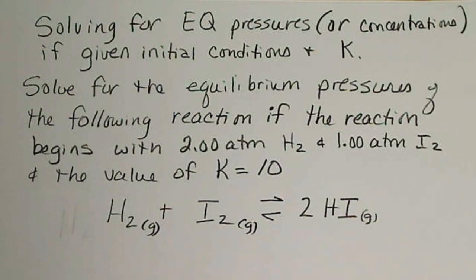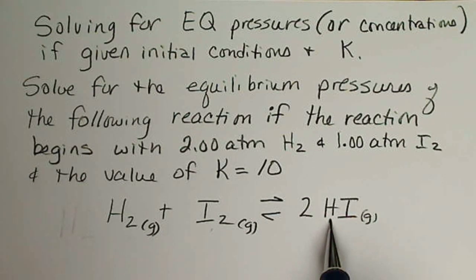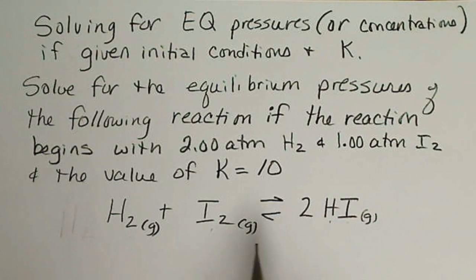In this video, we're going to look at a balanced equation. For example, hydrogen and iodine combining to form hydrogen iodide, and we are going to be given limited data on this.